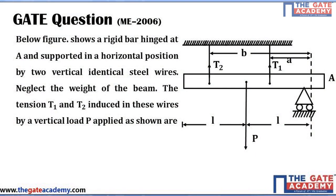The figure shows a rigid bar hinged at A and supported in a horizontal position by two vertical identical steel wires. Neglect the weight of the beam. The tension T1 and T2 induced in these wires by vertical load P applied as shown are given in the options.